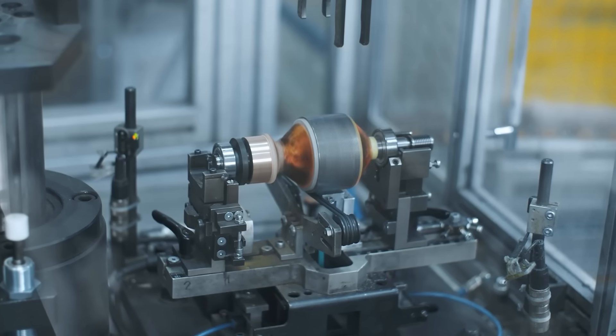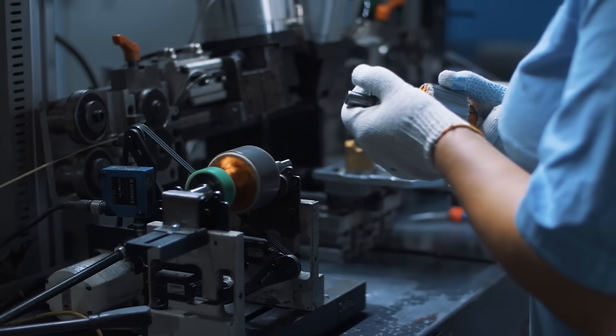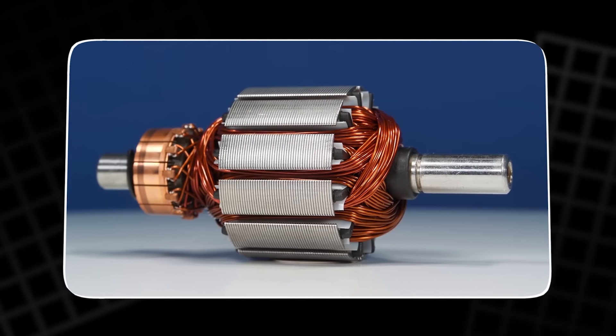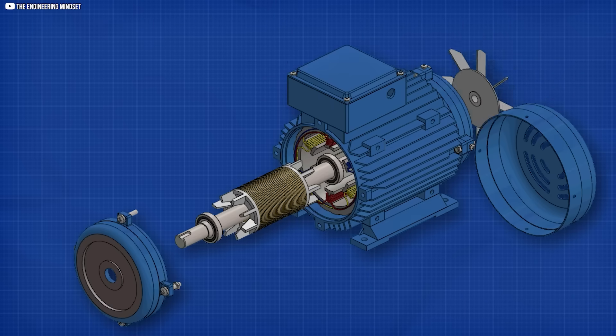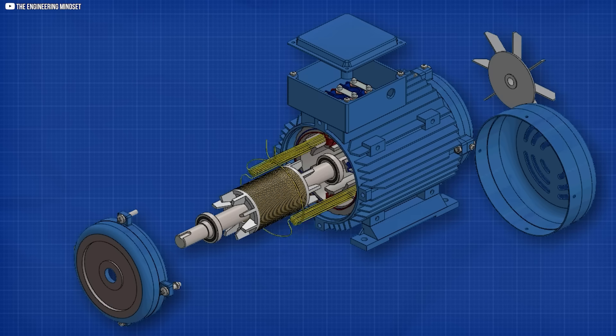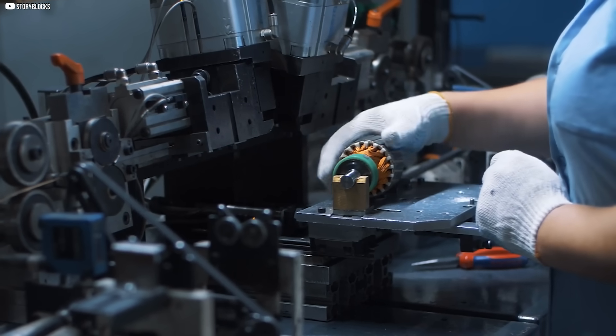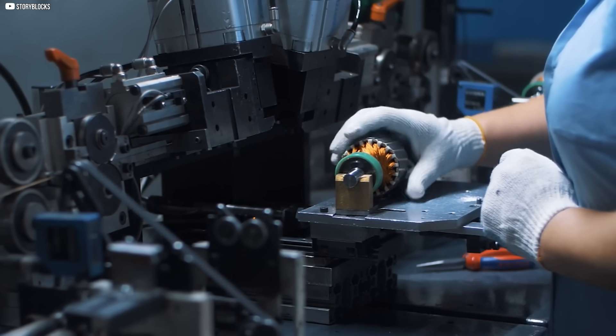This isn't how electric motors were supposed to work. For over a century, engineers followed the same rule. Metal coils, usually copper or aluminum, carefully wound and packed to move electrons and create magnetic force. But now, something strange is happening inside a quiet lab in South Korea.